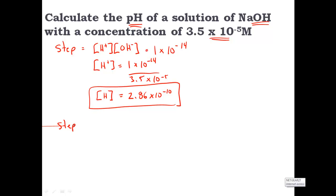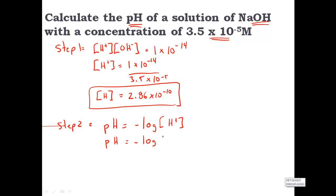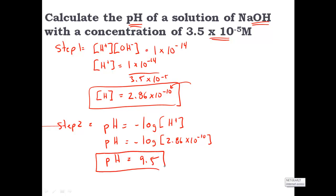Step 2 is to use that concentration in my pH formula: pH equals the negative log of the H⁺ ion. Plugging in the number, the pH equals the negative log of 2.86×10⁻¹⁰, and our pH is 9.5. That's in the ballpark of that exponent. So my pH is 9.5 — this is a basic solution. Anything over a pH of 7 is considered a basic solution.